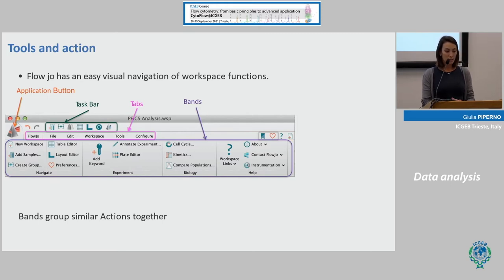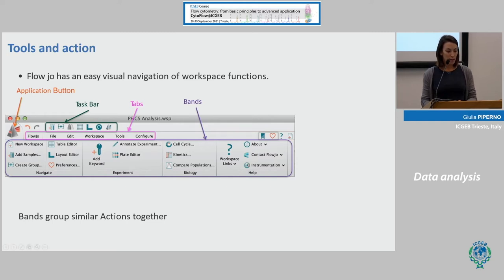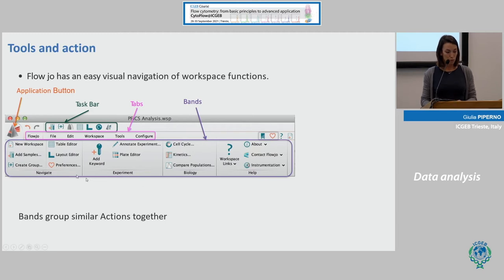FlowJo has an easy visual navigation of workspace functions. There is an application button where you can save, open, or edit a workspace. There is also a taskbar with actions you can perform, like inserting a sample or going to the Layout Editor and Table Editor. It is also divided into tabs and bands — bands are important because they group similar actions together, so you can navigate your experiment biology like cell cycle kinetics.